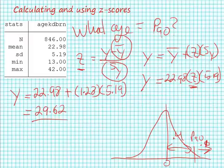In other words, the 90th percentile is associated with an age of approximately 30 years old. Women who are 30 years old are a dividing line separating the top 10 percent of the distribution from the bottom 90 percent of the distribution.